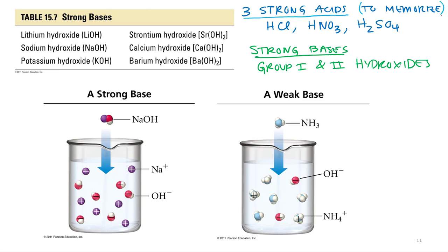Okay, so hydrochloric, nitric, and sulfuric acid, if you see those, assume they're strong acids, because they are. If you see any other acid, you can assume it's a weak acid.